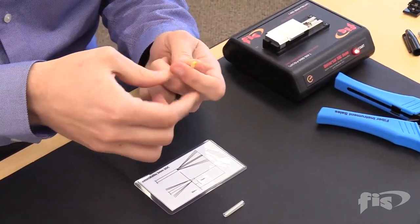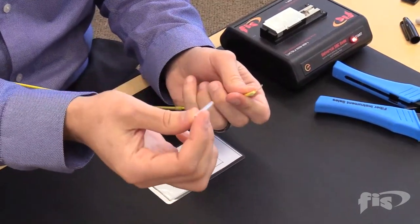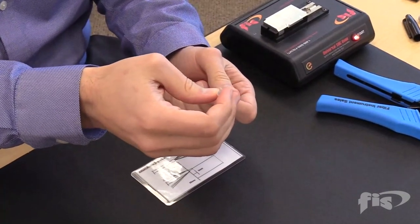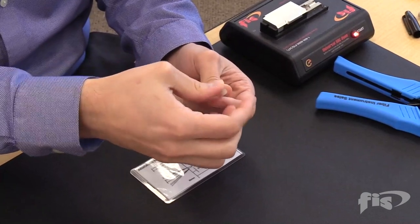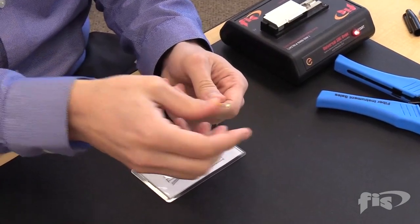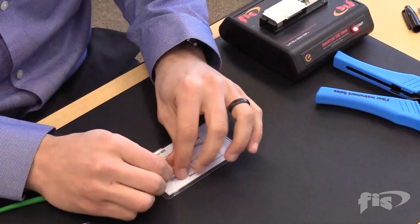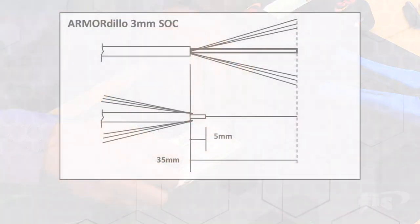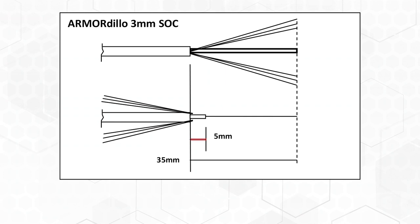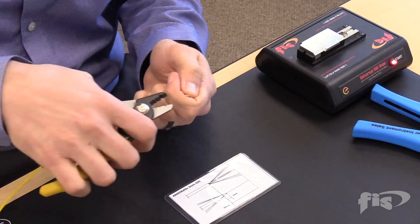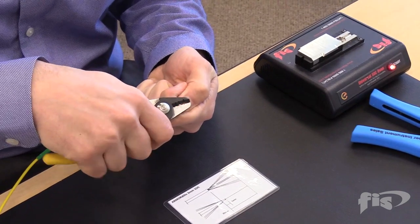Separate the Kevlar back from the 900-micron buffer and slide the mini sleeve over the Kevlar. Back to the strip chart to remove the 900-micron buffer by measuring 5mm. Strip a quarter of an inch at a time so you don't run the risk of breaking the glass.